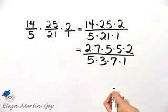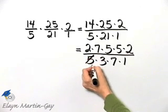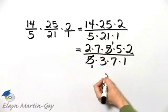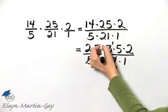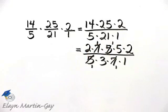Now I can see all common factors. There's a common factor of 5, a common factor of 7, and that's all of my common factors.